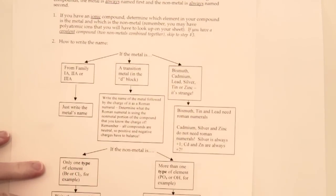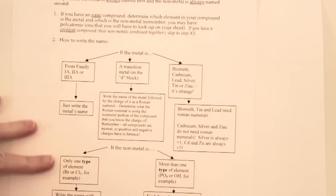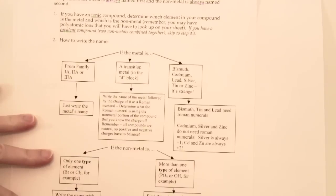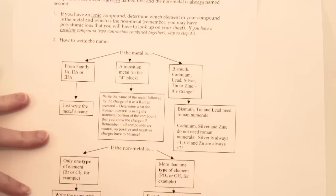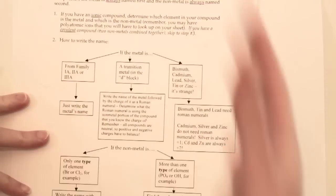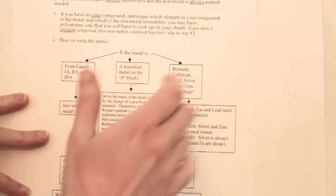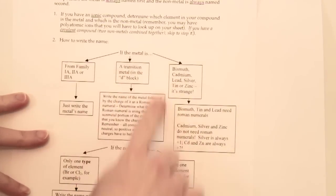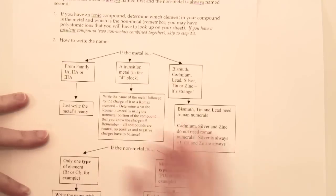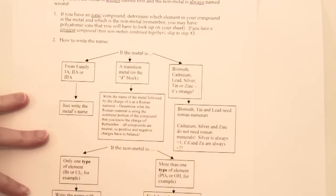There's one set of rules for ionic compounds and a different set of rules for covalent compounds. Ionic compounds are ones made up of a metal with a nonmetal. Because the majority of the periodic table are metals, there are a lot more combinations for metals with nonmetals. Covalent compounds are just nonmetals only and they have a different set of rules.